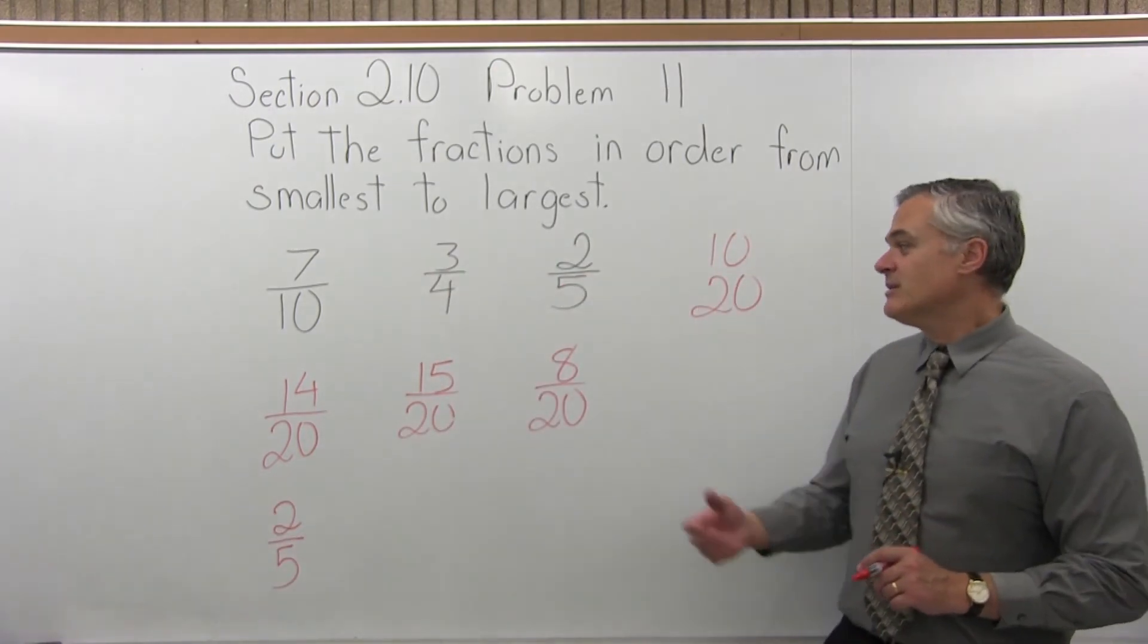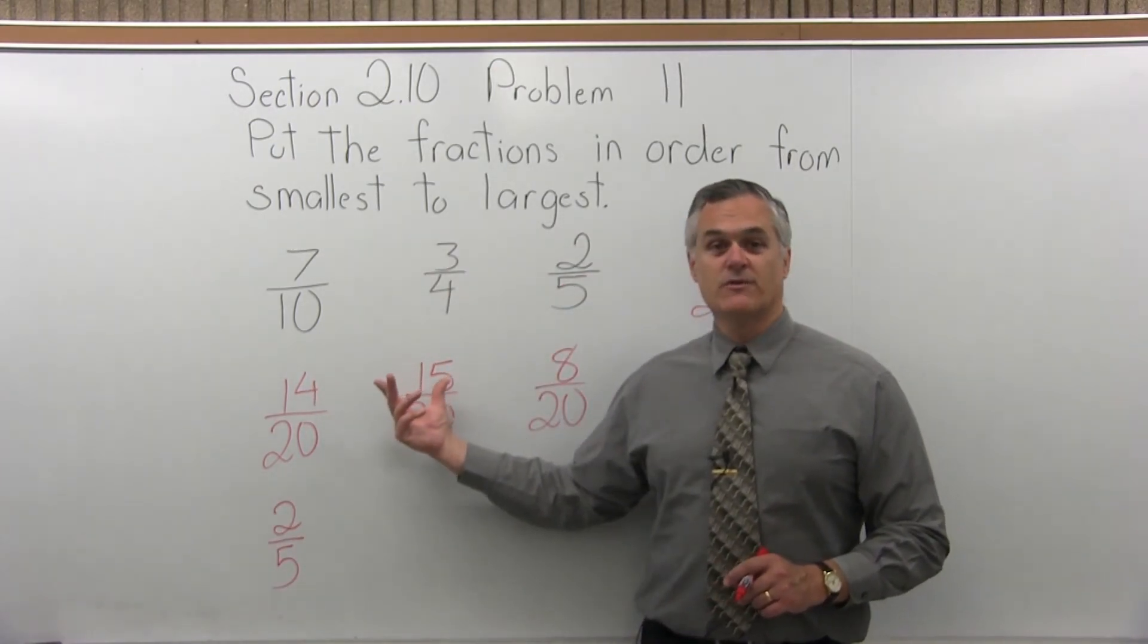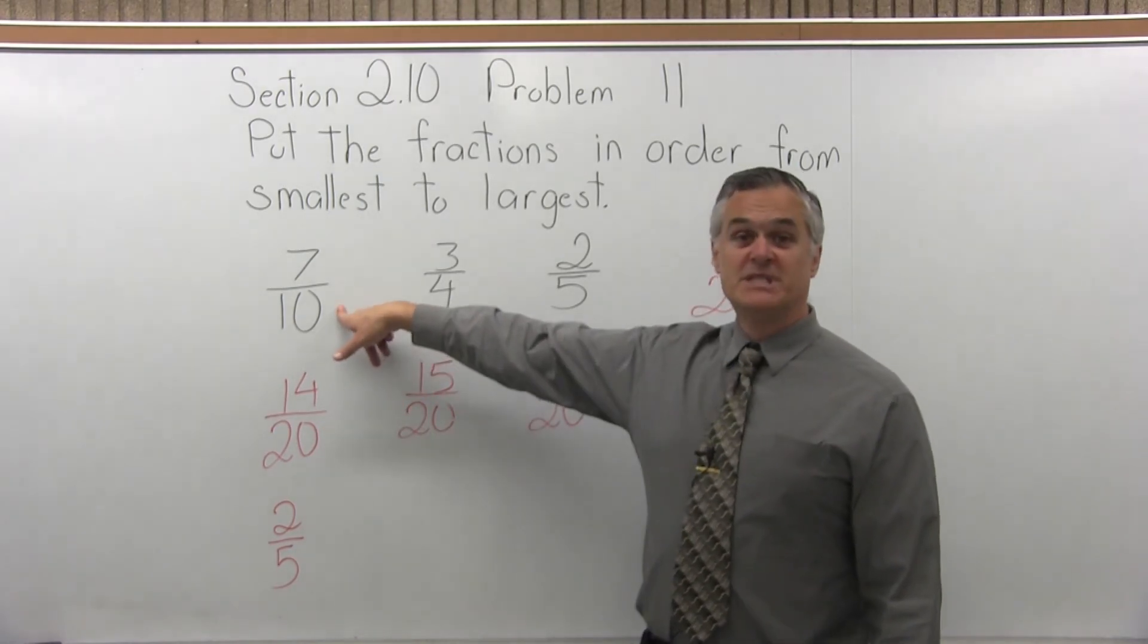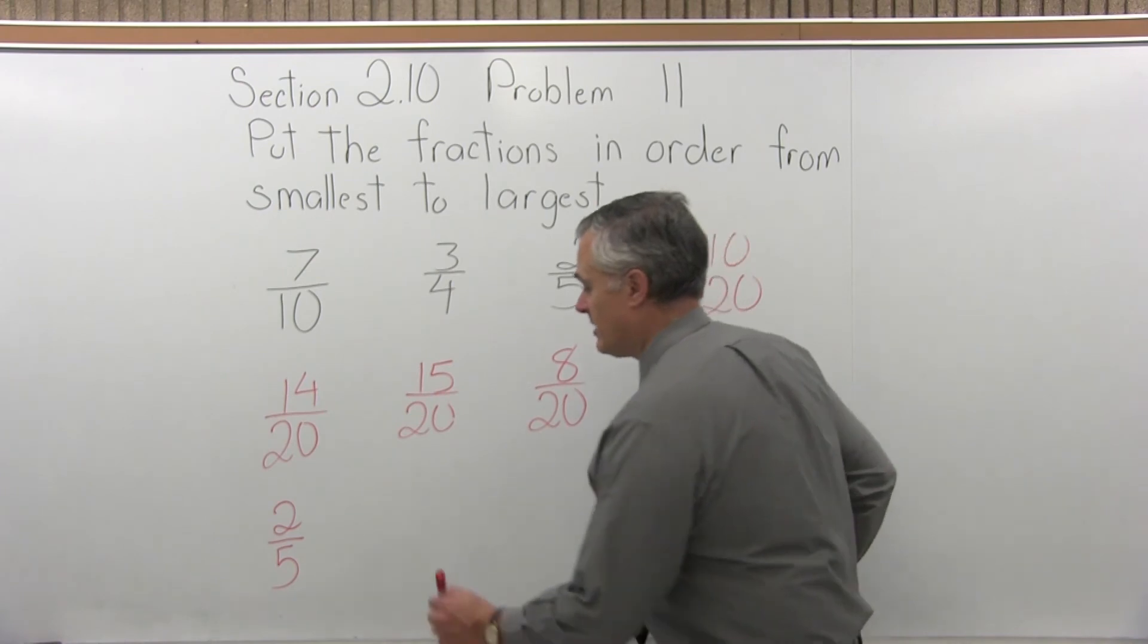Now the middle fraction, I'm choosing between 14 over 20 or 15 over 20. 14 over 20 would go in the middle. That came from 7 tenths, so that would be my middle fraction.